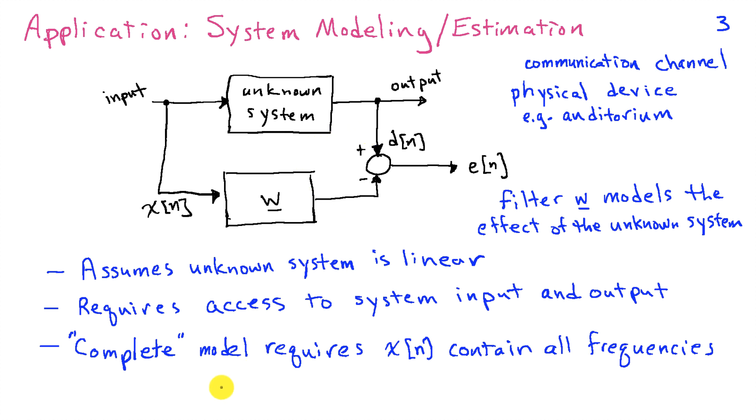And then finally, a little bit more subtly, in order to get a complete model of the system, we require that the input contains all frequencies of interest. In other words, that it's a sufficiently rich or broadband input signal. If you put in a single sinusoid here, then the only thing we're going to model is the behavior of the unknown system at that frequency.